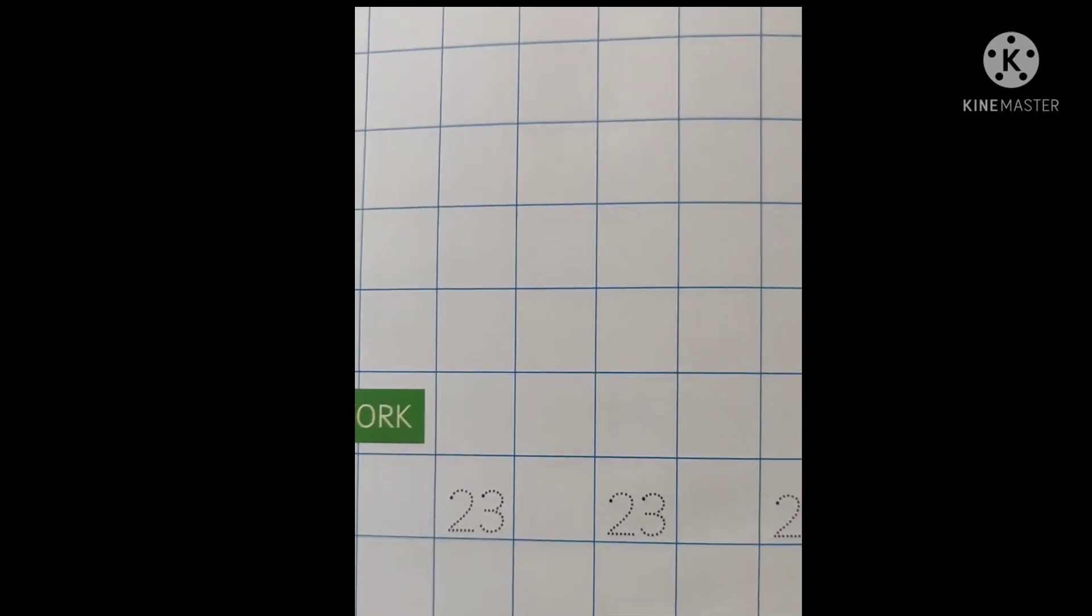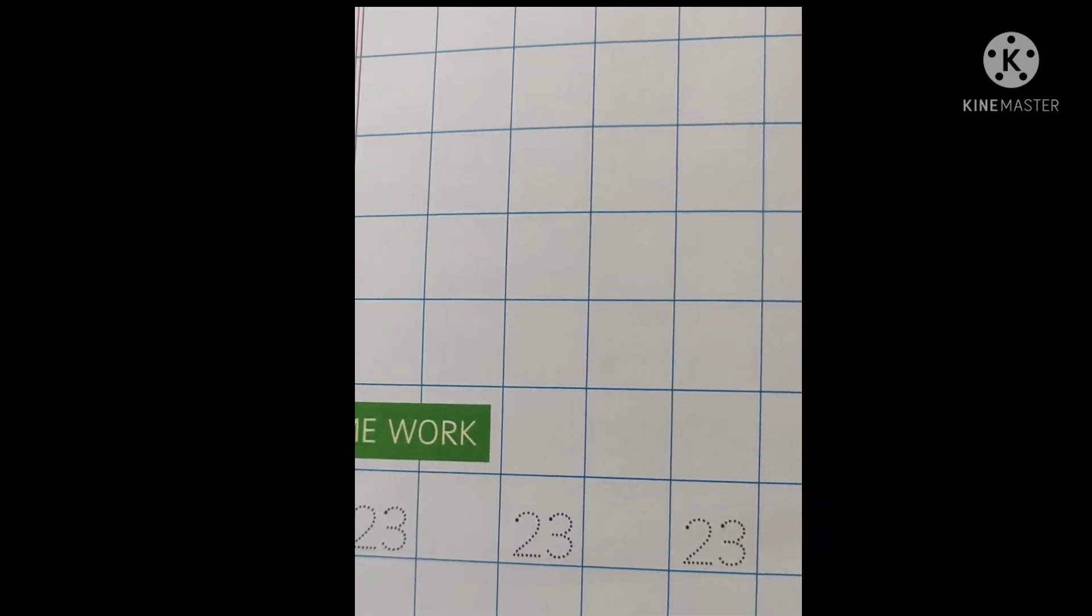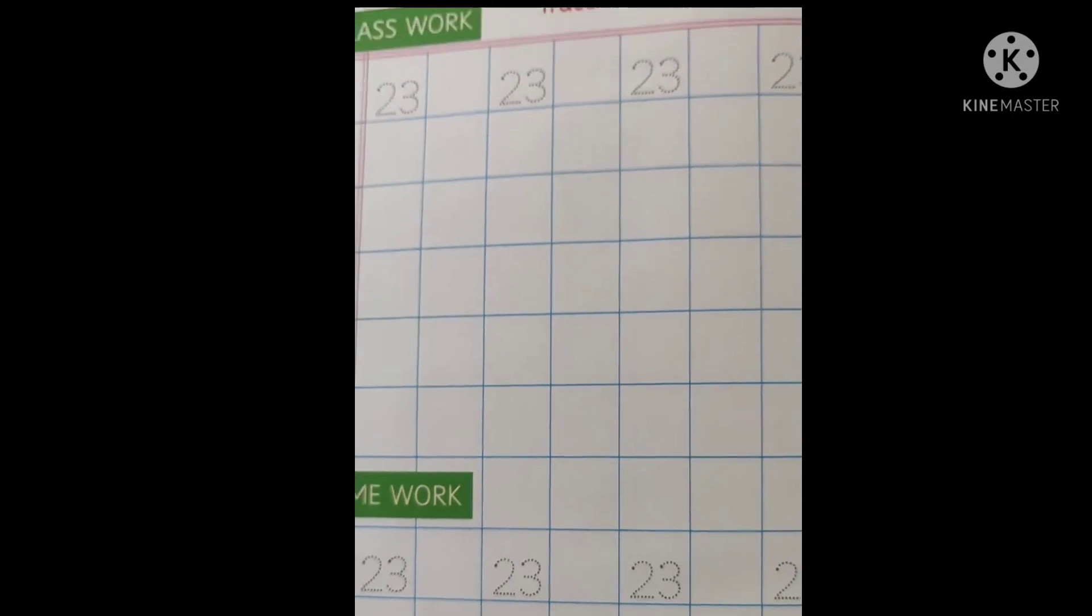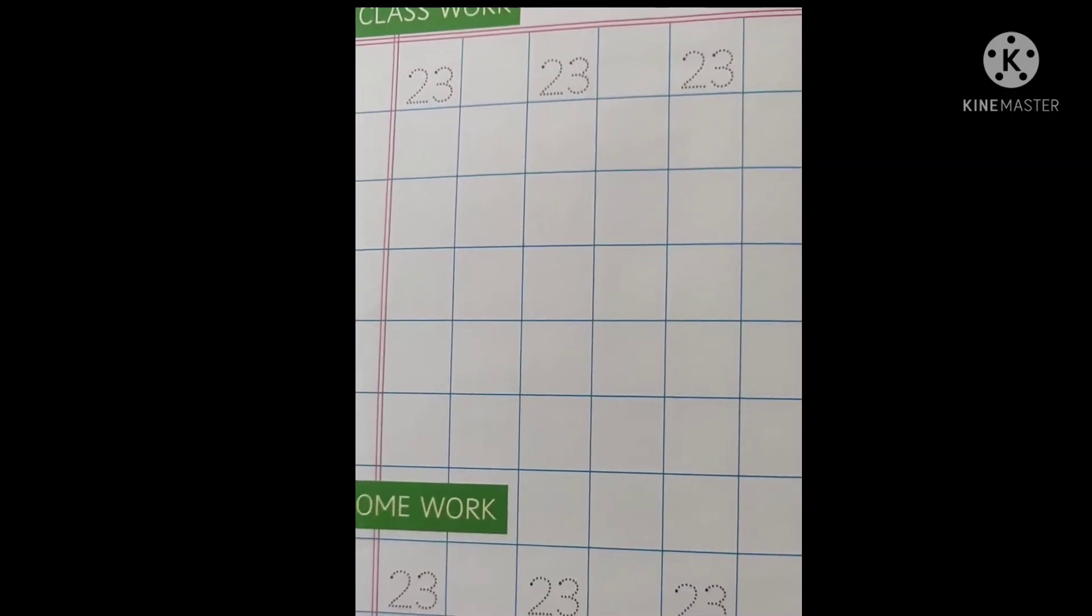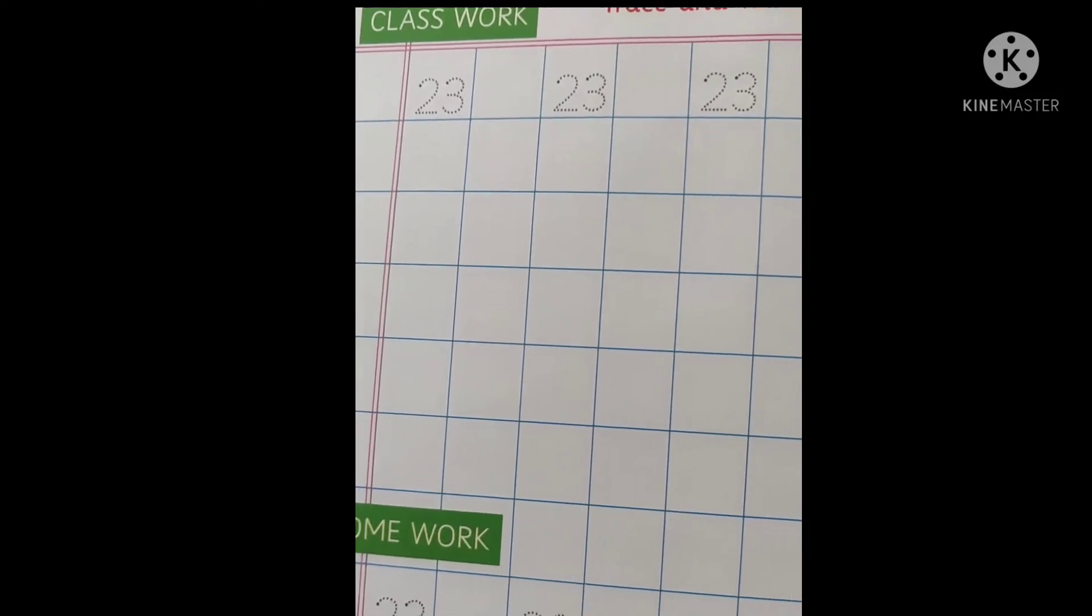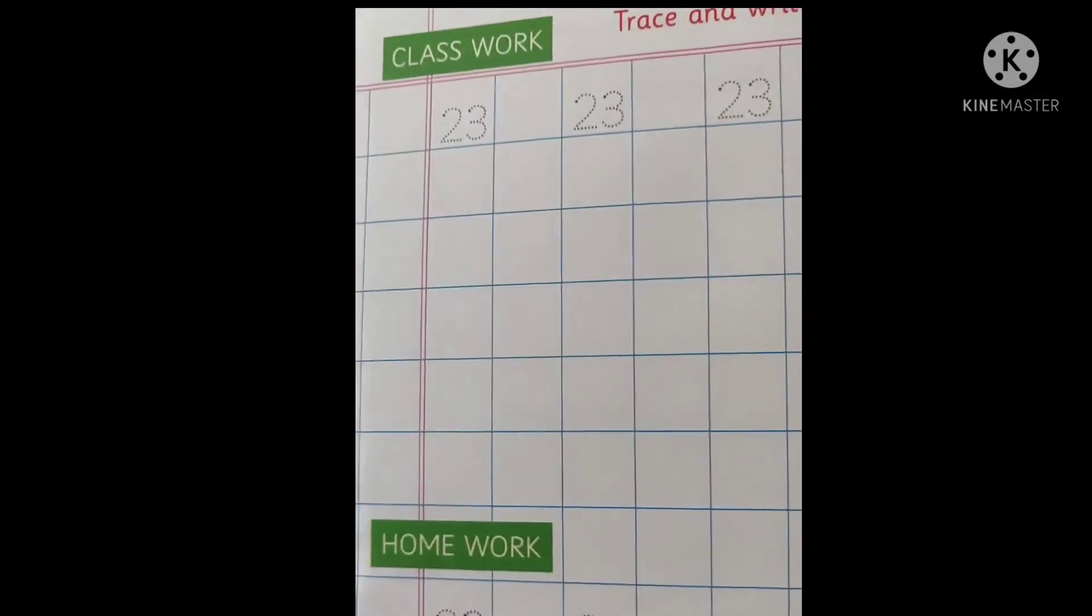Now in the previous class, that is yesterday's class, we have completed writing number 22. Today we will write number 23 in your textbook, not in the notebook, only in the textbook children.